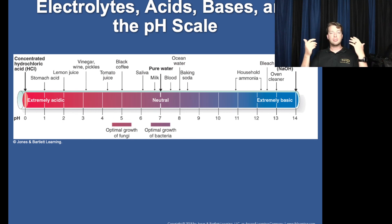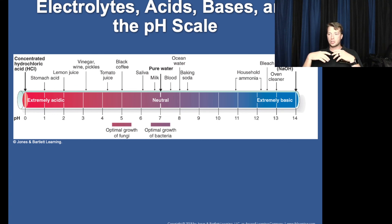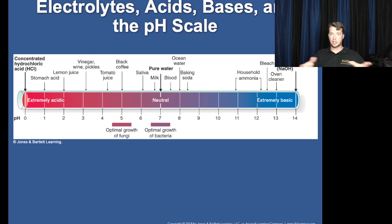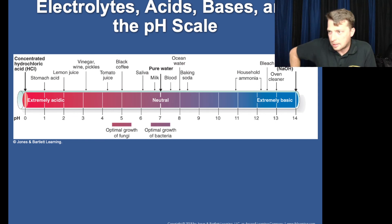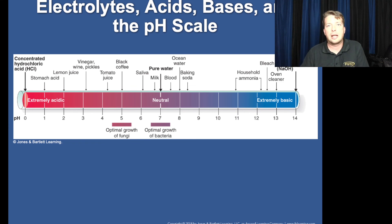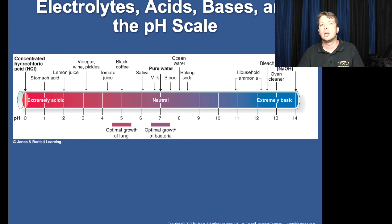If you have an extremely acidic stomach — like you drank too much tomato juice, lemon juice, or fire station coffee — you'll need to balance that out with milk. You mix a weak acid with that strong concentrated acid so that it doesn't react violently in your stomach.